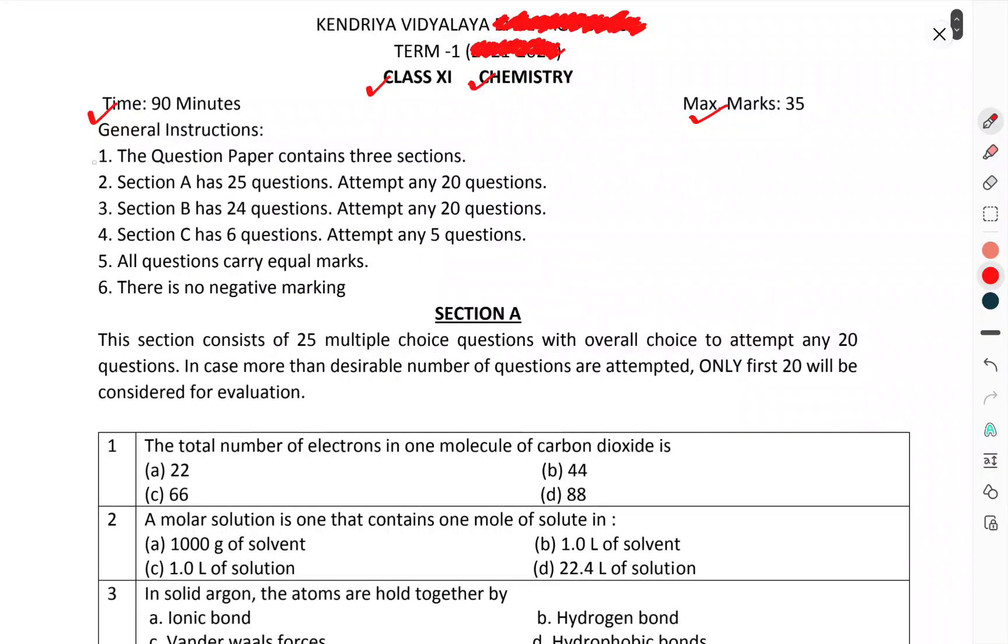General instructions: The question paper contains 3 sections. Section A has 25 questions, attempt any 20 questions. Section B has 24 questions, attempt any 20 questions. Section C has 6 questions, attempt any 5 questions. All questions carry equal marks. There is no negative marking.